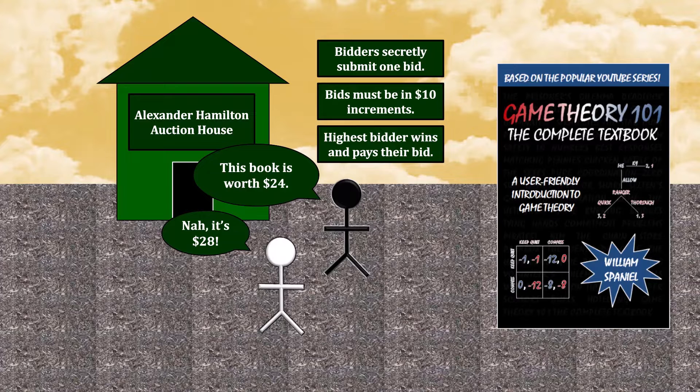Here's the puzzle. Given these rules and how your opponent feels about the situation, what is your optimal bid?